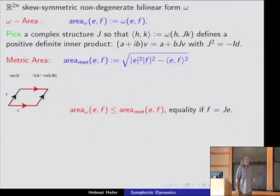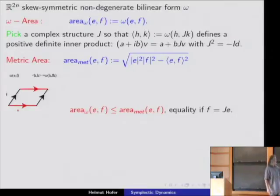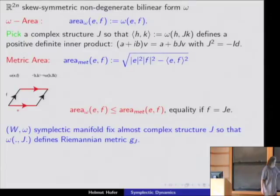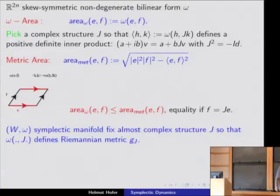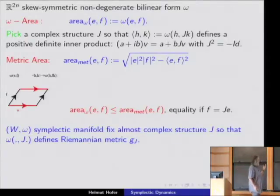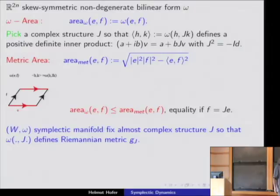If you know this — and that was Gromov's reasoning — then after choosing this auxiliary data J, in the general case we have a symplectic manifold with a two-form omega, and we choose an almost complex structure. Then what natural objects can you look at? Surfaces which have the property that at each point the signed area equals the metric area. The wonderful thing is that this is an elliptic partial differential equation — namely, a nonlinear Cauchy–Riemann equation.